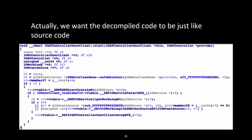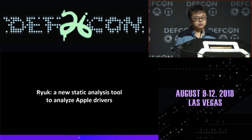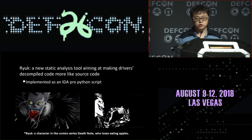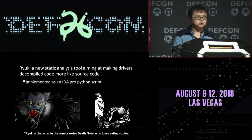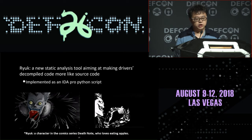We want the decompiled code to look just like source code. So we propose a new tool called RilK — a static analysis tool for making Apple drivers' decompiled code more like source code. It is implemented as an IDA Pro Python script. The name RilK stands for a character in a comic series who loves eating apple.